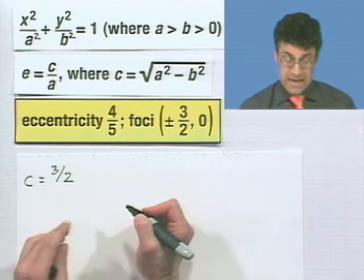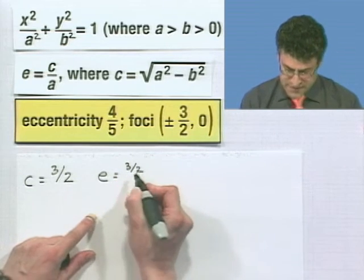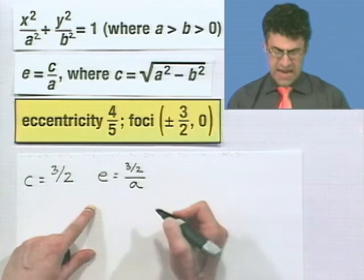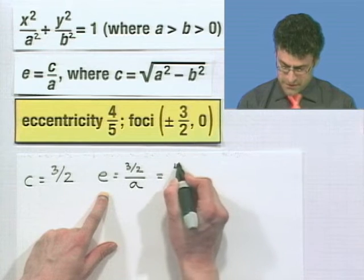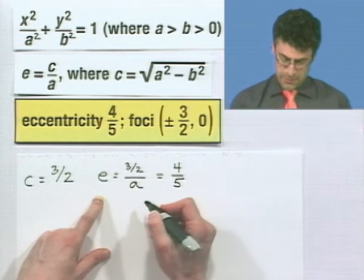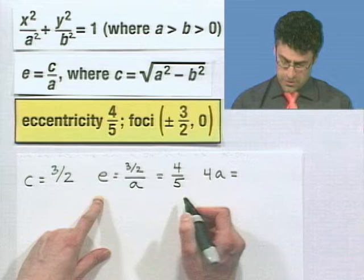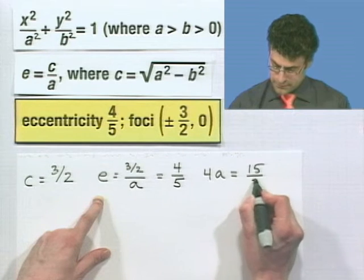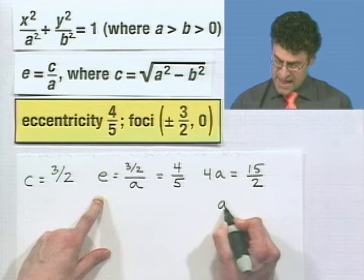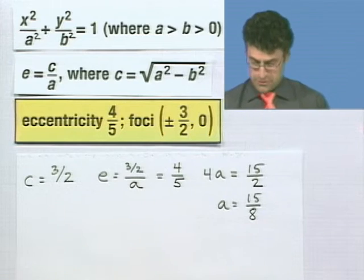What is e? Well, e is nothing more than c, which is 3 halves, divided by a. And a is one of the things we need for our formula. So this is awesome. I know that e is actually 4 fifths, and so I see this equals 4 fifths. Now I can solve for a by taking the cross product or cross multiply, and I see that 4a equals 5 times 3 halves, which is 15 halves. Therefore, if I divide both sides by 4, I see that a equals 15 over 8. I'm halfway home, but I've got a little bit more work to do.